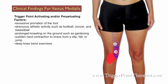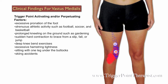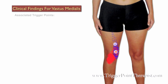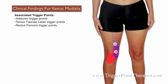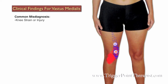Additional factors include deep knee bend exercises, excessive hamstring tightness, sitting with one leg tucked under the buttocks, skiing accidents, and impact trauma. Associated trigger points include those of the adductor, tensor fasciae latae, rectus femoris, and vastus lateralis muscles. Clients with active trigger points in the vastus medialis muscle are very commonly misdiagnosed with knee strain or knee injury.